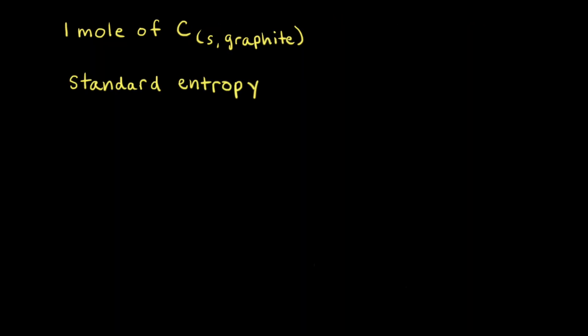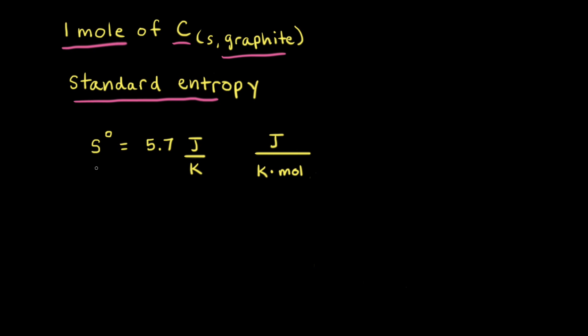Now that we understand the concept of zero entropy, let's look at the entropy of a substance — specifically one mole of carbon in the form of graphite. Standard entropy refers to the absolute entropy of a substance at a pressure of one atmosphere and a specified temperature, often 25 degrees Celsius. The standard entropy of graphite at 25°C is 5.7 joules per Kelvin mole, and this is called standard molar entropy.